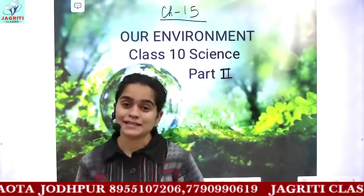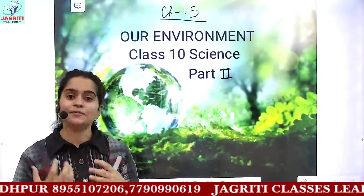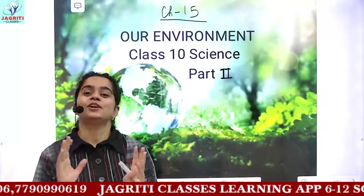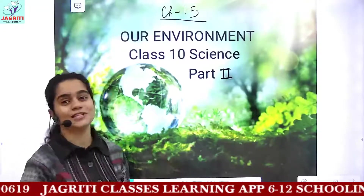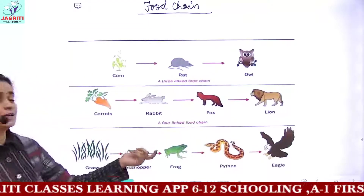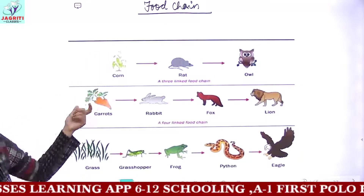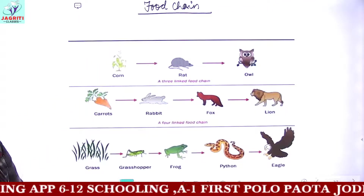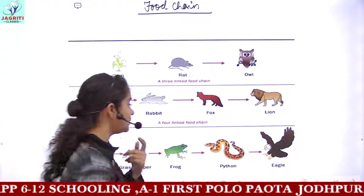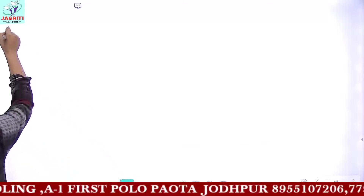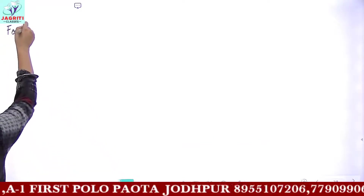Now we will be continuing with a new topic from this chapter itself — food chain. After studying the different types and components of ecosystem, we will be starting with food chain. So let's start today's class. The diagram in front of you is called the diagram for food chain. Let's discuss what is basically a food chain and how you can describe it.